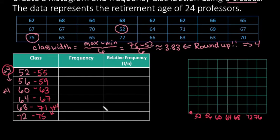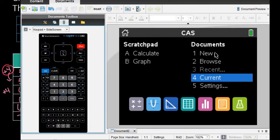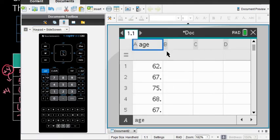Instead of going through all 24 data points and counting where everything falls individually, I'll use my calculator to help find that frequency. I already have the data entered.